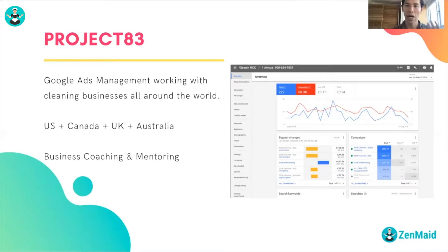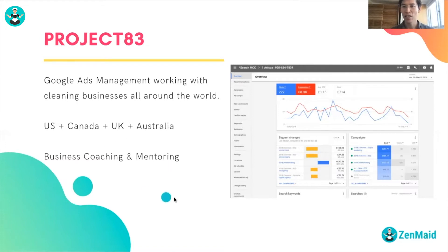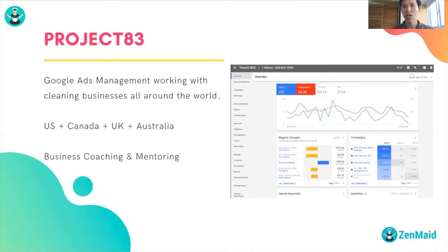Although I'm based in the UK, the way clients search for cleaning services throughout the English-speaking world is pretty similar. The strategy that got us success in the UK can be applied in the US, Canada, and Australia. People search Google for cleaning services in a similar way, and with how Google Ads is set up, we can apply a similar template regardless of location. My own cleaning business basically runs on autopilot now, so my time is split between Project 83 and business coaching.